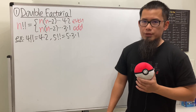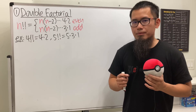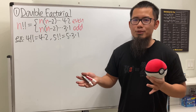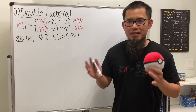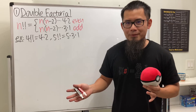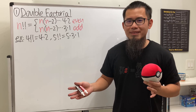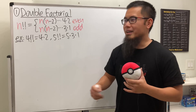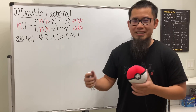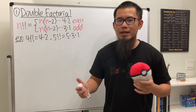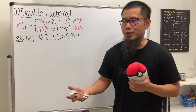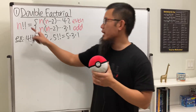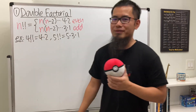Have you seen three exclamation marks? That's called the triple factorial — and yes, it's a real thing. We can keep going with four exclamation marks, and so on. In general, these are called the multi-factorial.